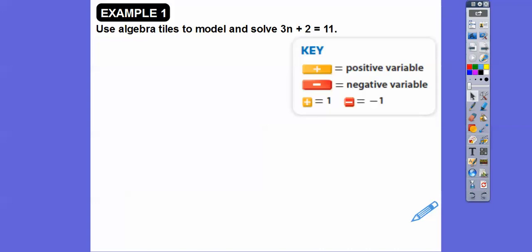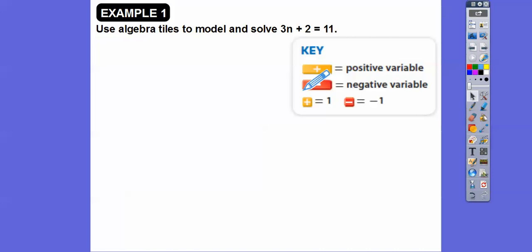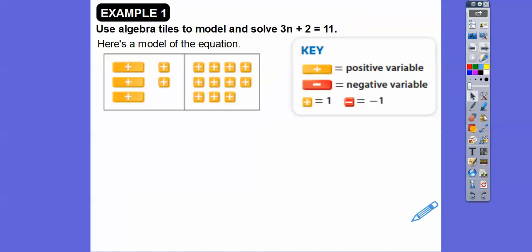Remember, here's our key right here. These are going to be our positive variables, and these will be our negative variables. We'll do three of these for the 3n, and two plus-1 tiles for the plus 2, and over here we'll do 11 plus-1 tiles. Here's the model that represents that.